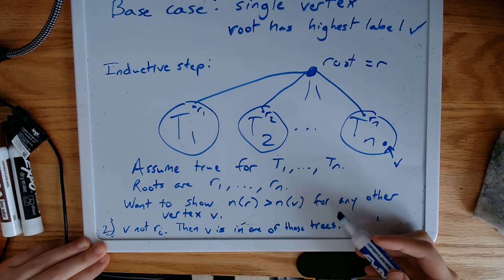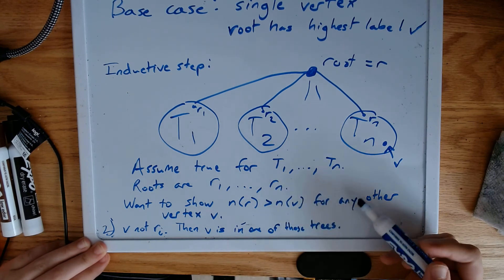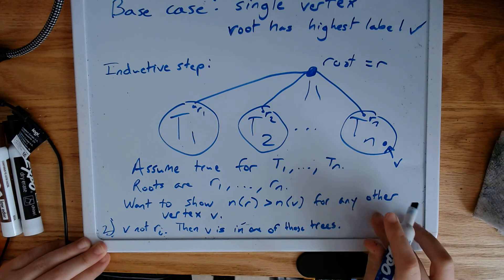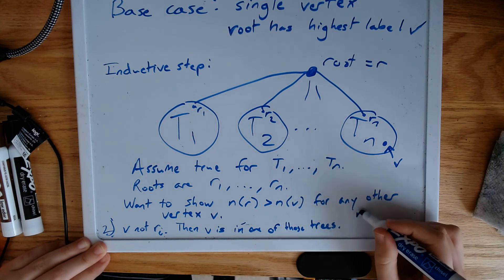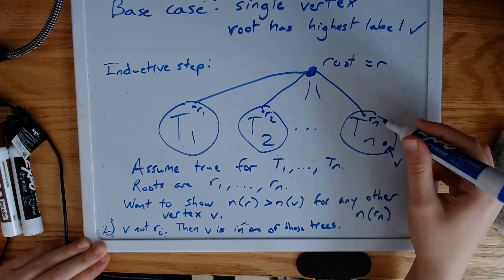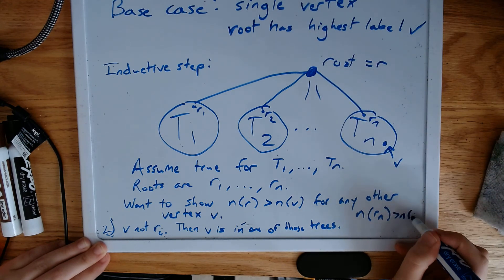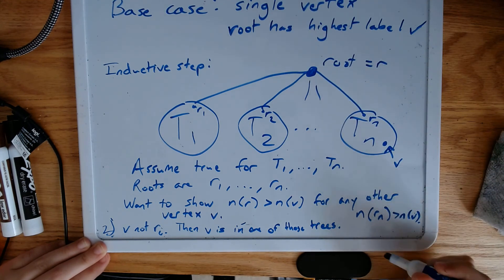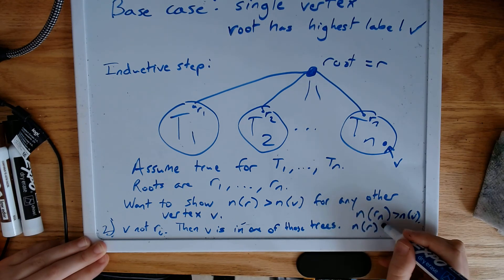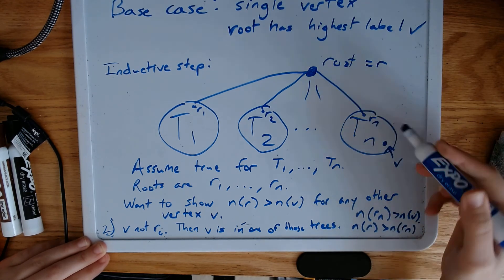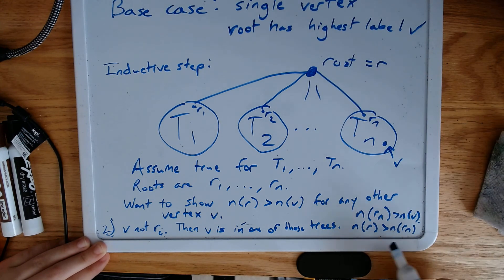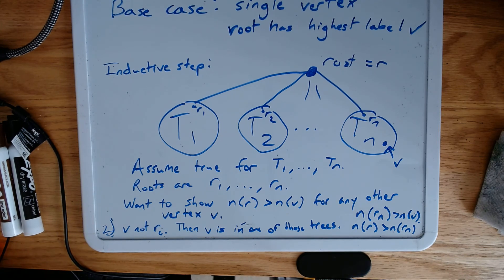Well, we assumed that our claim was true for all of these trees. So the label of the root in the tree that it's in is greater than the label of v. But by the heap property, the label of our root is greater than the label of the root of that tree. So n of r must be greater than n of v. So we've proved it. And the heap property for a rooted tree guarantees us that the root has the highest label.